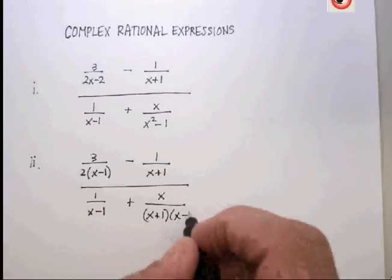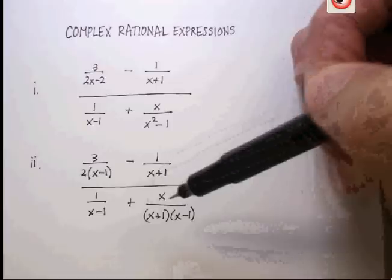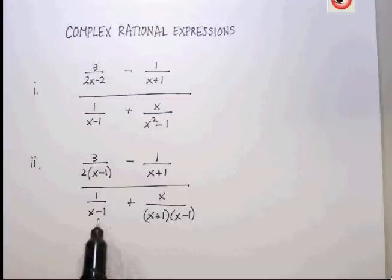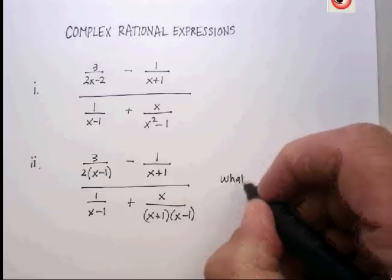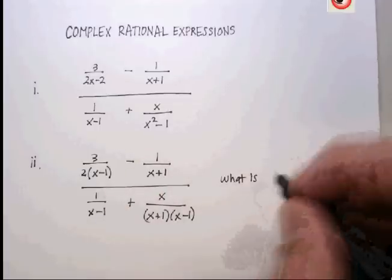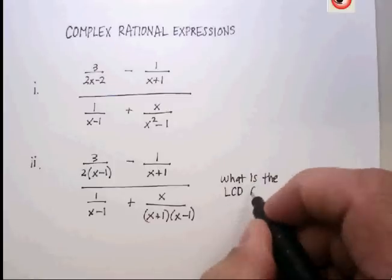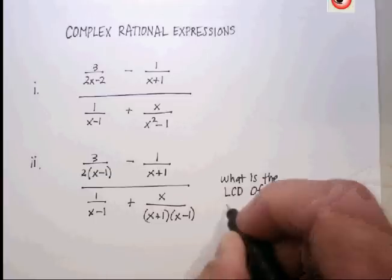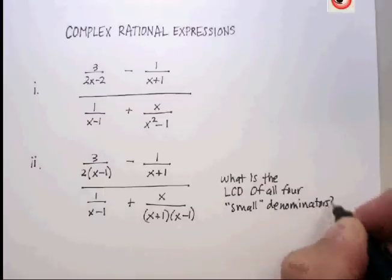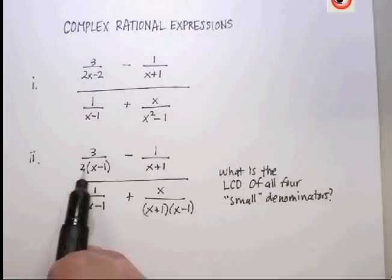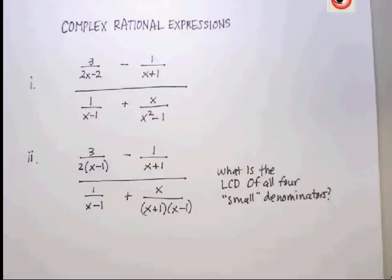I like this particular technique that I'm going to show you because it really kind of makes this a lot faster in terms of simplifying. What you need to do now is look at each one of the four denominators and ask yourself what is the common denominator for all four of the smaller denominators. So what is the lowest common denominator, the LCD, of all four small denominators? And you could probably figure out that it would be - you need to have a 2 in each one of these and you need to have an (x minus 1) and an (x plus 1).